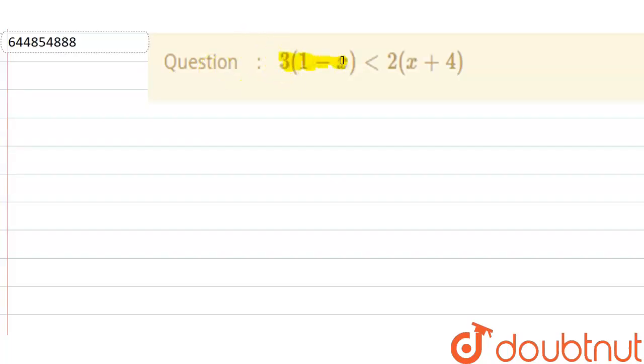3(1-x) < 2(x+4). We need to find the value of x. So what I do is multiply this thing in the bracket.